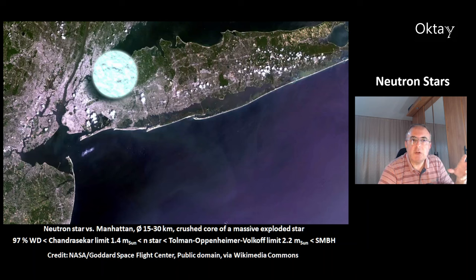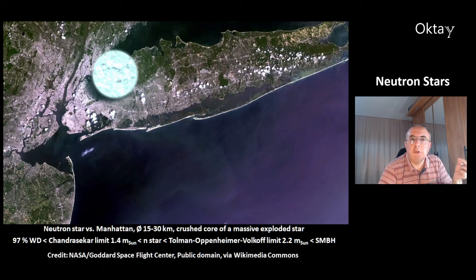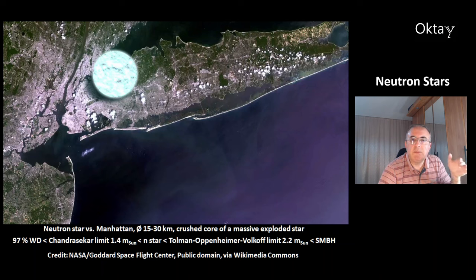They are the crushed core of a massive exploded star. They are between the Chandrasekhar limit of 1.4 solar masses and the Tolman-Oppenheimer-Volkoff limit of 2.2 solar masses. 97% of the stars become white dwarfs, which are below the Chandrasekhar limit, and above the Tolman-Oppenheimer-Volkoff limit these objects are the stellar mass black holes.